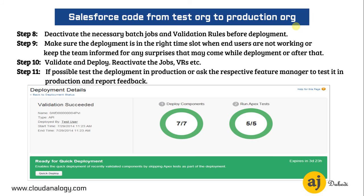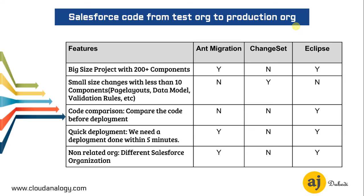This has happened a couple of times — I've seen a developer who, when asked if the work was done, said yes, and then just went ahead and did the deployment while the client was actively working. That can bring surprises, especially if there are page layout changes or anything related to the UI. Make sure you do it in a well-planned manner: validate, deploy, and if possible test the deployment in production and ask the respective feature manager or end client to test it and report feedback.